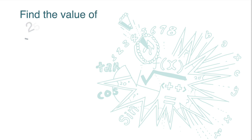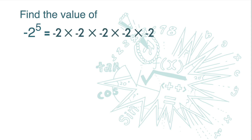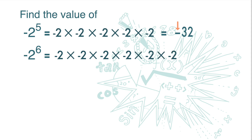Find the value of negative 2 to the power of 5. The answer is negative 32. Note that the sign here is negative. Find the value of negative 2 to the power of 6. The answer is 64. Note that the answer is positive.